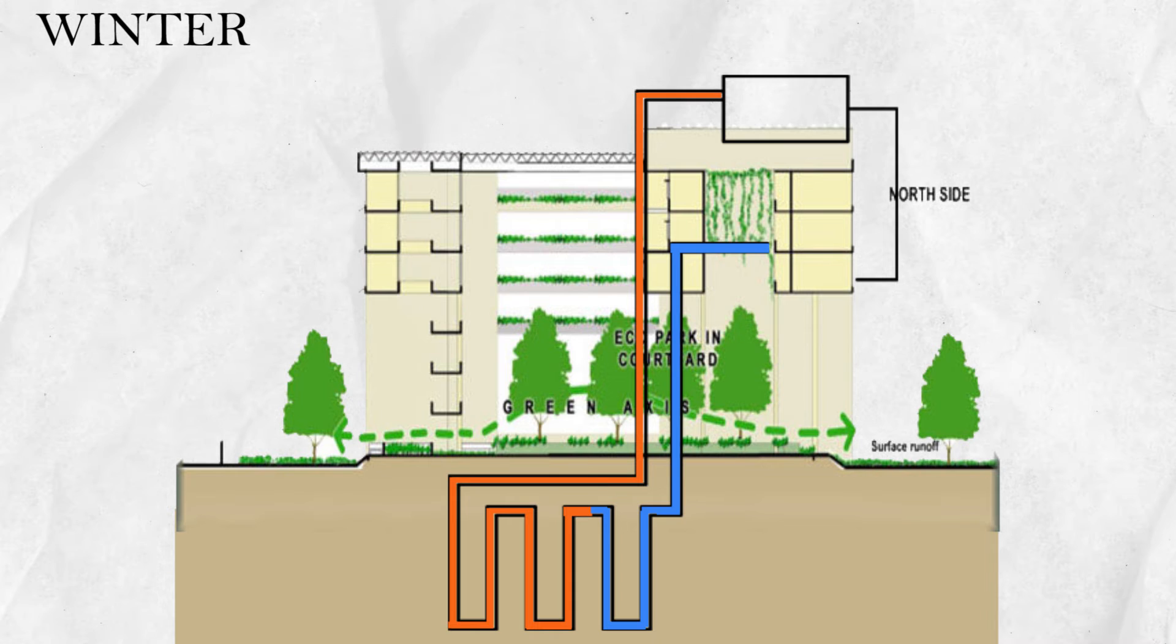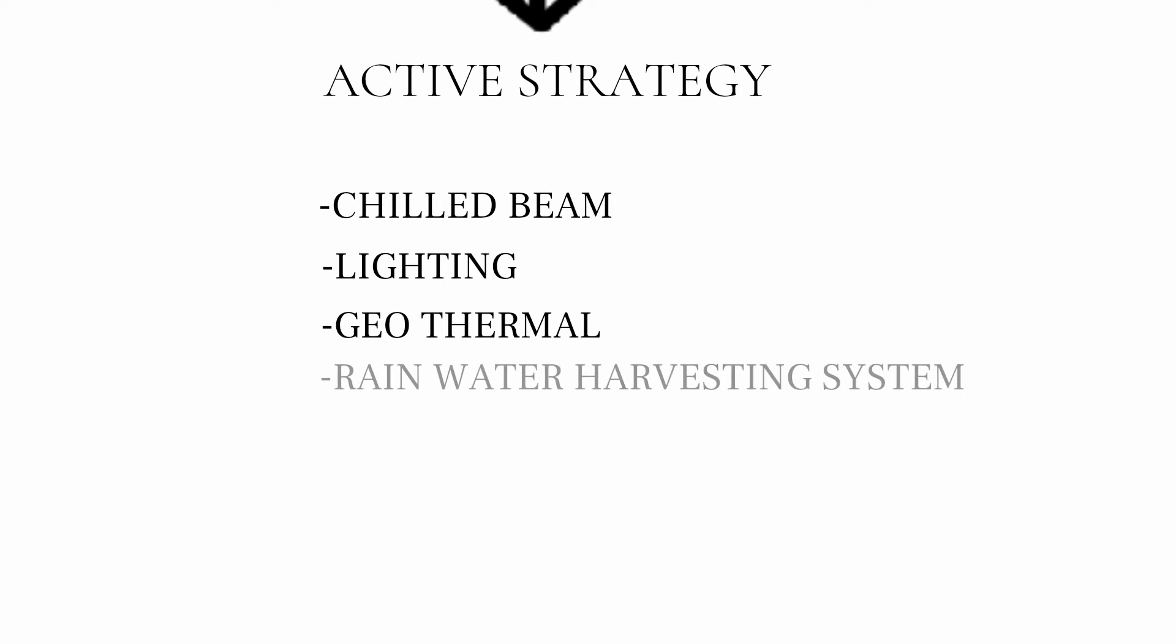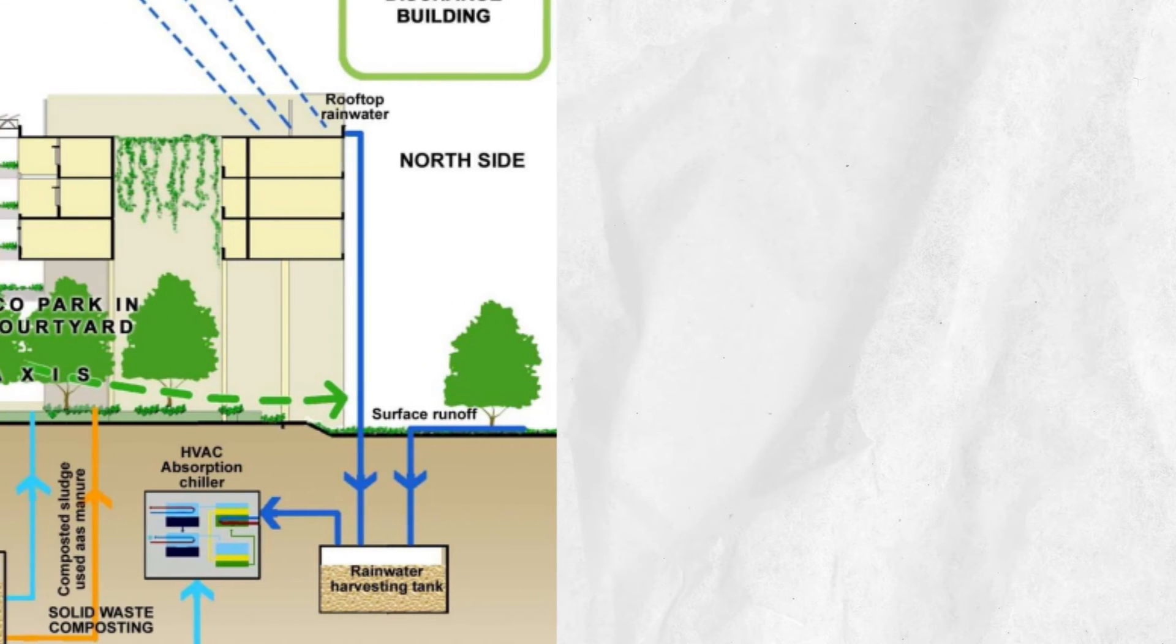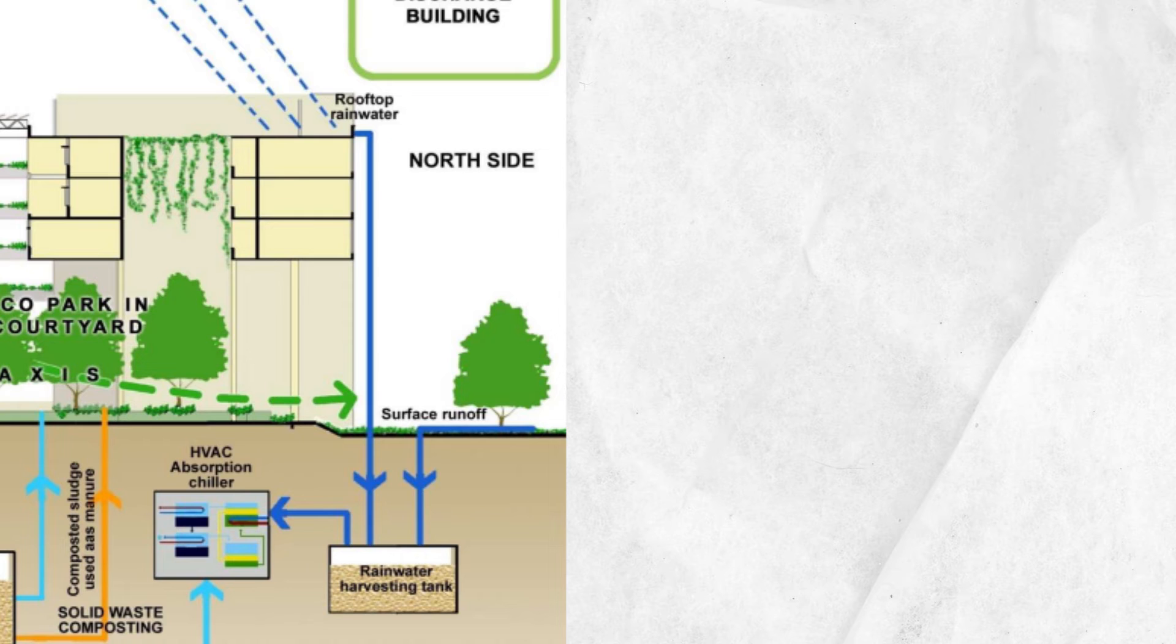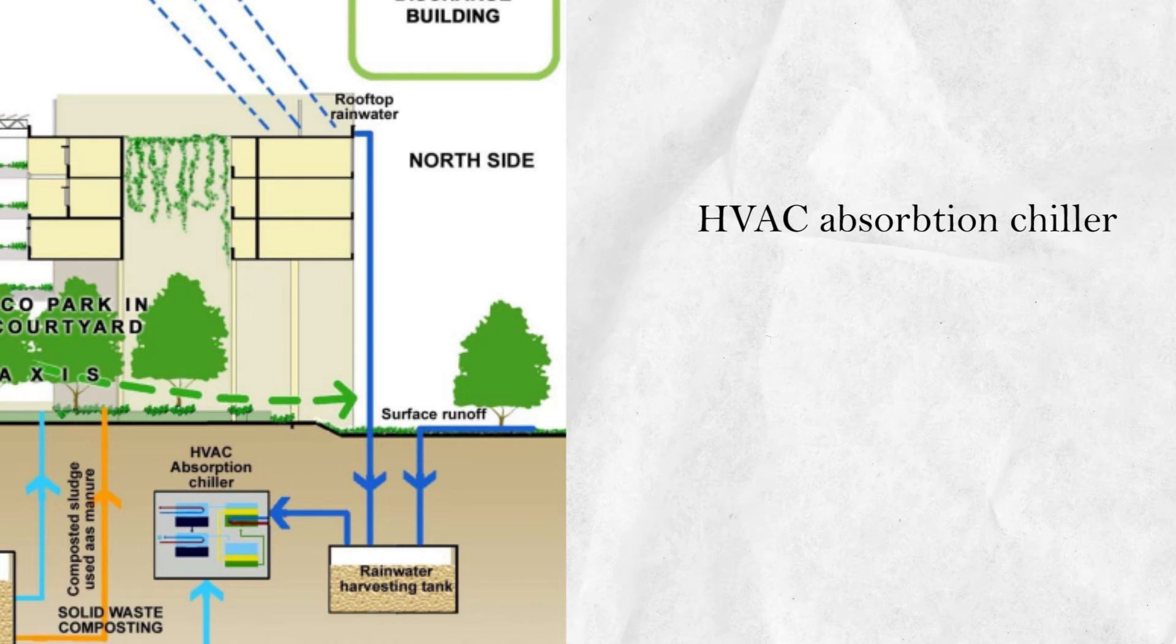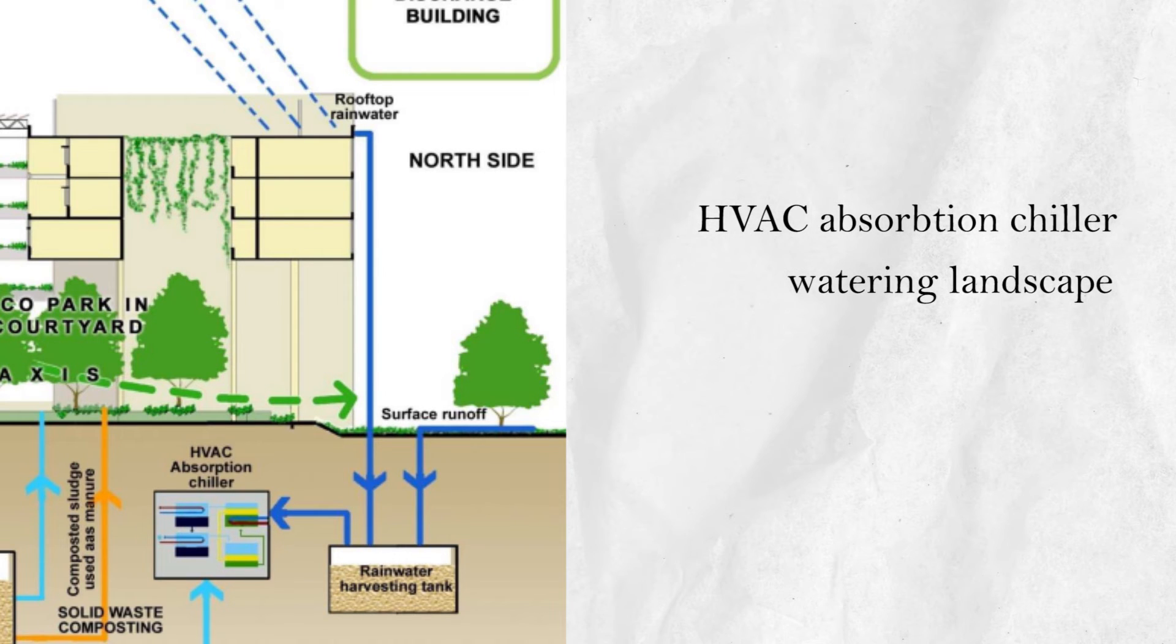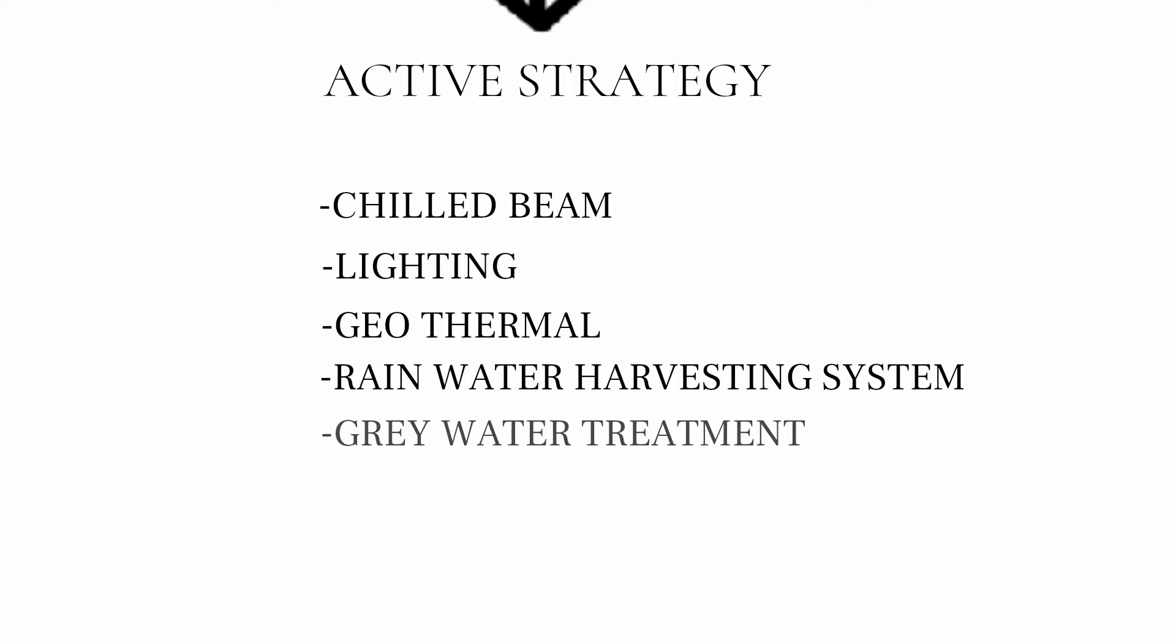Rainwater harvesting system: Rainwater is harvested through the roof and porous surfaces and stored in a tank. It is treated and later used for VAC absorption chiller, for watering landscape, and in toilets for flushing.